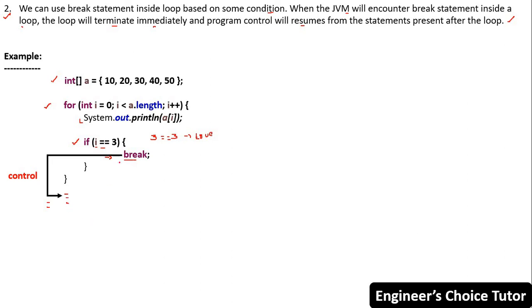The control resumes from the statements present after the loop. In this example, the break statement's execution depends on the condition i==3. When this condition is true, only then the break statement will execute. That is why we say: we can use break statement inside a loop based on some condition. The for loop is initialized with i=0, the condition is checked, and the value is incremented by one. When the value of i becomes 3, the loop terminates.